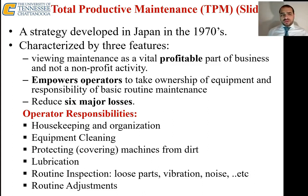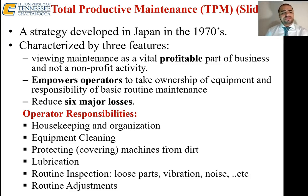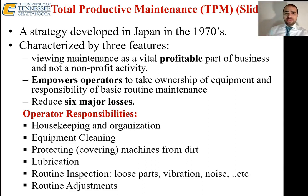The second main feature of TPM is empowering operators. Operators take ownership of their equipment — for example, 'that's Mike's milling machine, that's Robert's milling machine.' This becomes much more effective. The third feature is reducing six major losses. TPM has clear-cut goals — nothing vague — just simple but clearly defined objectives that can be implemented, similar to 5S in lean manufacturing.